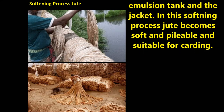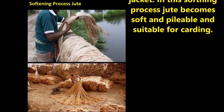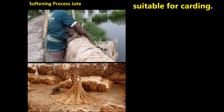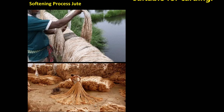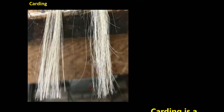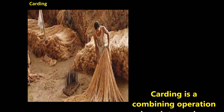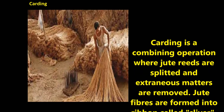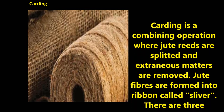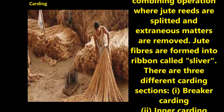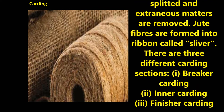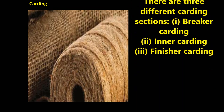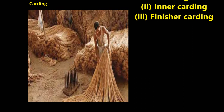After the softening process, jute becomes soft, pliable, and suitable for carding. Carding is a combing operation where jute reeds are split and extraneous matter is removed. Jute fibers are formed into a ribbon called a sliver.